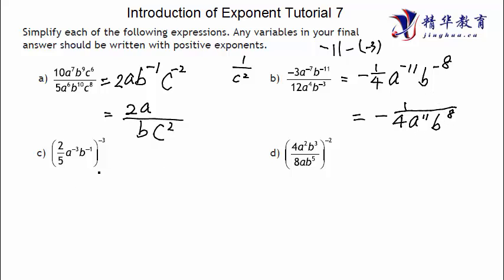Next one. For c and d, we can try. Let's do the traditional way for c. So (2/5)^(-3), the negative 3 is going to apply to each one of these terms. So (2/5)^(-3), and then a^(-3) to the power of negative 3, and then b^(-1) to the power of negative 3.